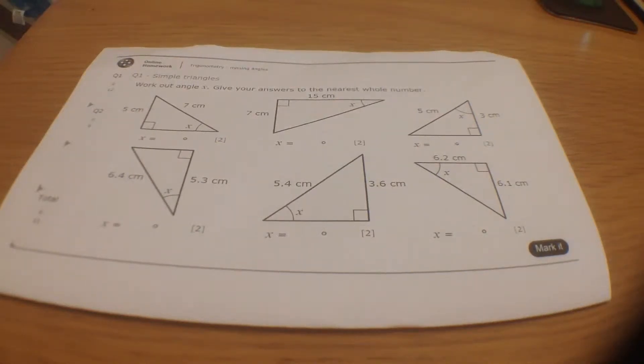The layout of the missing angles homework is almost identical to the layout of the missing sides homework. And our method to begin with is exactly the same. We label the sides, we always do that.